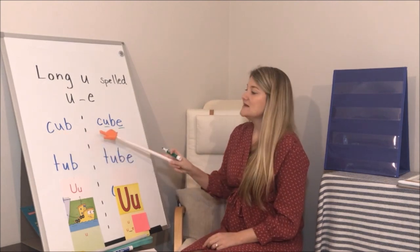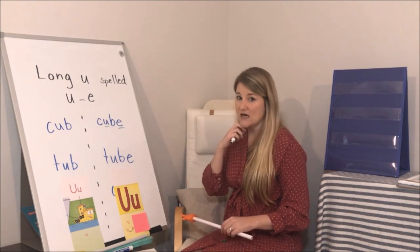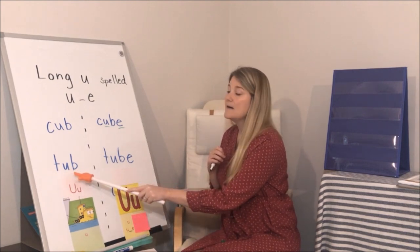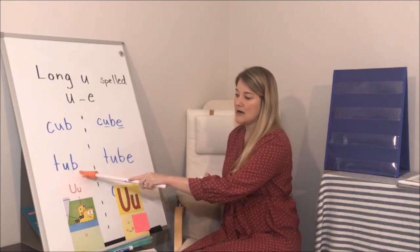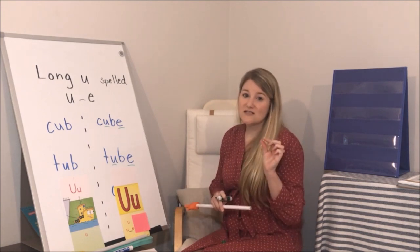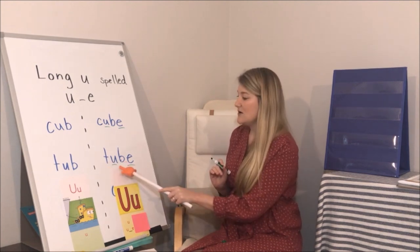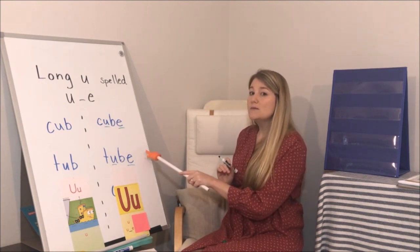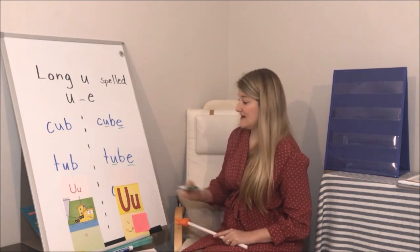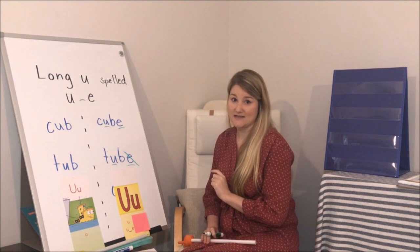Now with 'tub': sound — T, sound — U, blend — 'tuh,' sound — B, blend all together — 'tub.' Good job. Now I see my long U spelling pattern. Sound — T, sound — U, sound — B — 'tube.' Notice that E is silent, so we can mark it with a silent bubble. Let's do two more. Short U: sound — C, sound — U, blend — 'cuh,' sound — T, blend it all together — 'cut.' Now with the long U spelling pattern: sound — C, sound — U, sound — T, blend — 'cute.' What's the word? Cute.